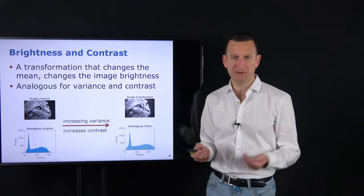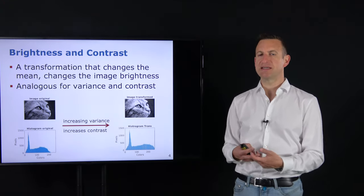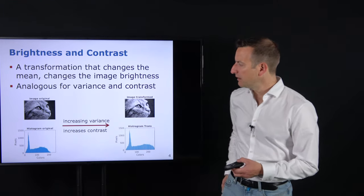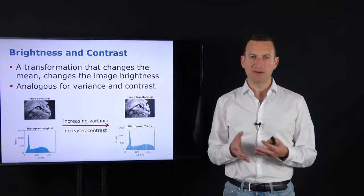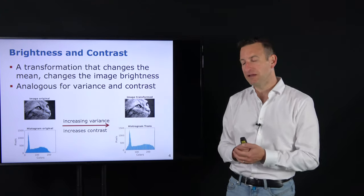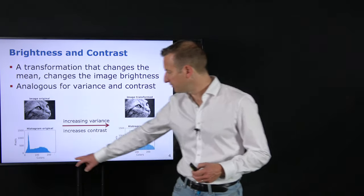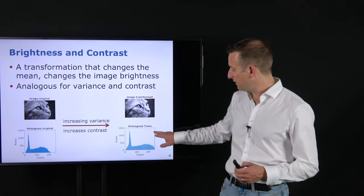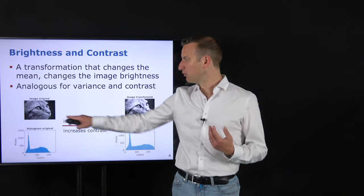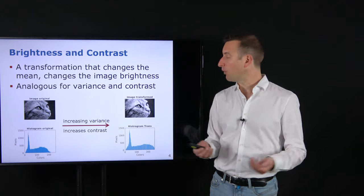What happens when we apply a transformation depends on the function we use. This function typically changes the histogram because it changes the intensity values. A transformation that changes the mean intensity — shifting the histogram to the right — will make the image brighter. Changing the variance, for example increasing the spread of intensity values, increases the contrast. We can stretch values from a range like 0–220 to the full spectrum and even introduce some oversaturation, visibly increasing contrast.